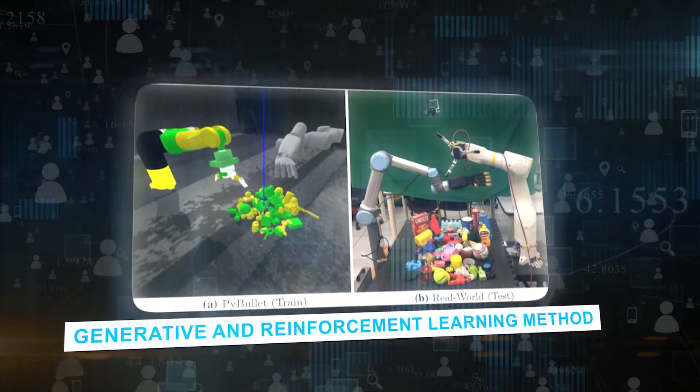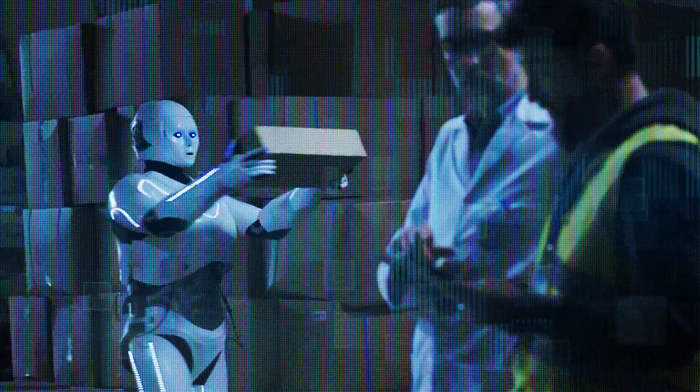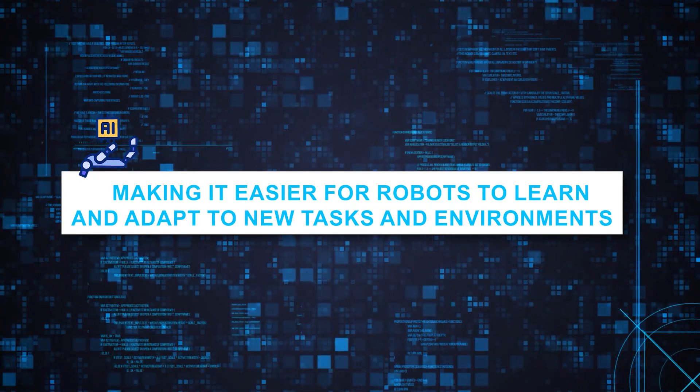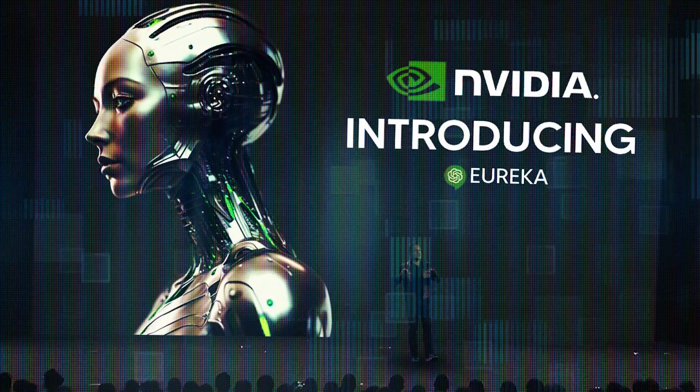The implications of Eureka for robotics are promising. It could change the way we interact with robots and machines. The integration of generative and reinforcement learning methods offers a bright future for AI-robotic synergy, making it easier for robots to learn and adapt to new tasks and environments. With Eureka, the possibilities for advancements in robotics are vast.